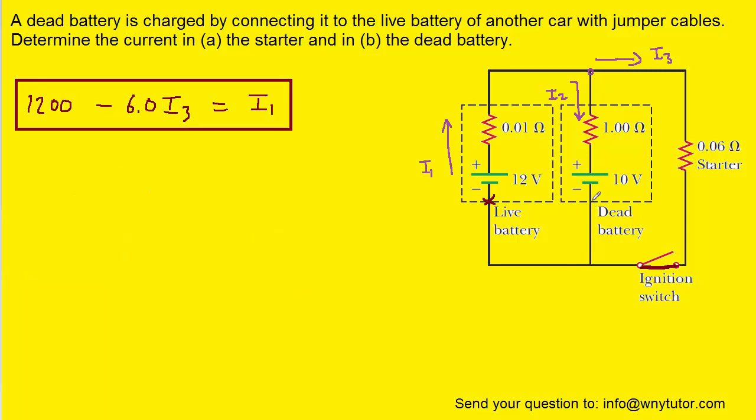Next, we're going to apply another loop rule. But this time, we're going to start right here where this orange X is. And we're going to move around the right-most loop in this fashion. And then return back to the orange X.